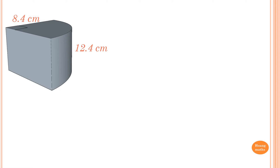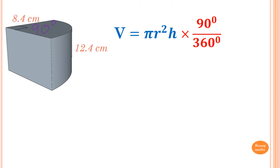To find the volume of this, first of all we know that it's a quarter of a cylinder — the angle given is 90 degrees. The formula is volume equals pi r squared h, and we only want one quarter of it, so we multiply by 90 out of 360 degrees, or multiply by a quarter.